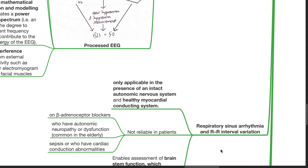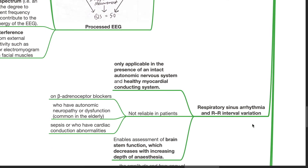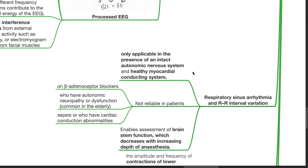Respiratory sinus arrhythmia and RR interval variation can be used as a measure of depth of anesthesia. It is only applicable in the presence of an intact autonomic nervous system and healthy myocardial conduction system. It is thus not reliable in patients on beta blockers, patients with autonomic neuropathy or dysfunction, patients who are septic, or those with cardiac conduction abnormalities. It enables assessment of brainstem function, which decreases with increasing depth of anesthesia.